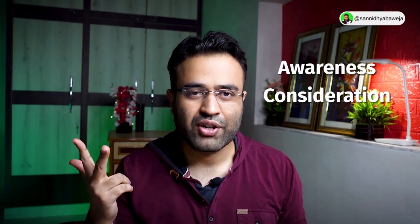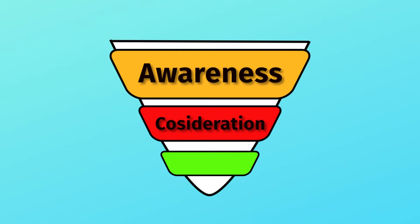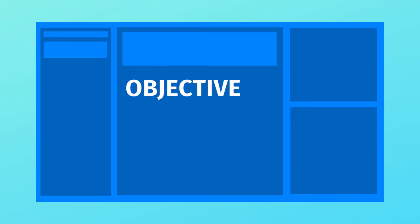Now let's jump back to Facebook campaign objectives. Facebook has divided their objectives into three sections: awareness, consideration, and conversion. These three sections are inspired by the marketing funnel — you first make the person aware of the product or problem, then push them into the consideration stage by gaining their trust, and finally push them to purchase the product.